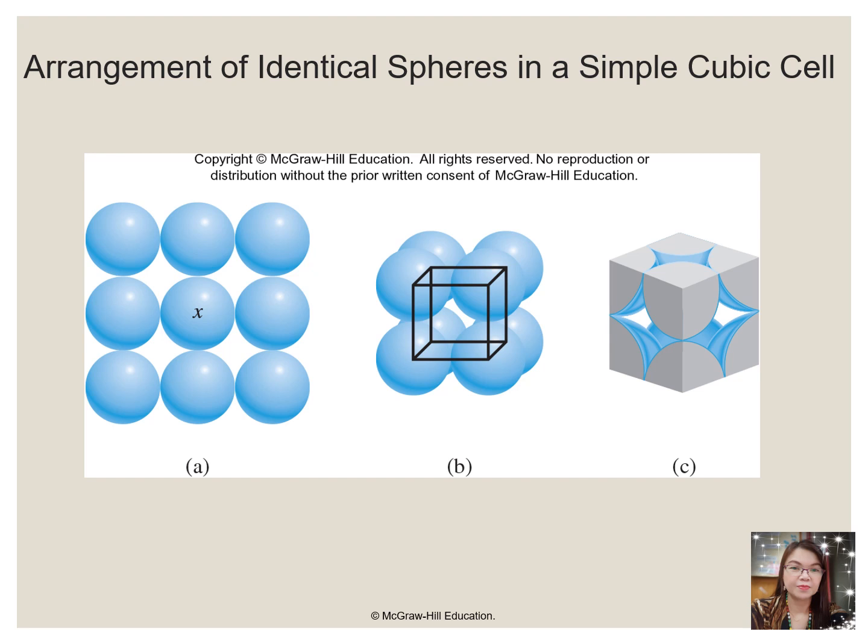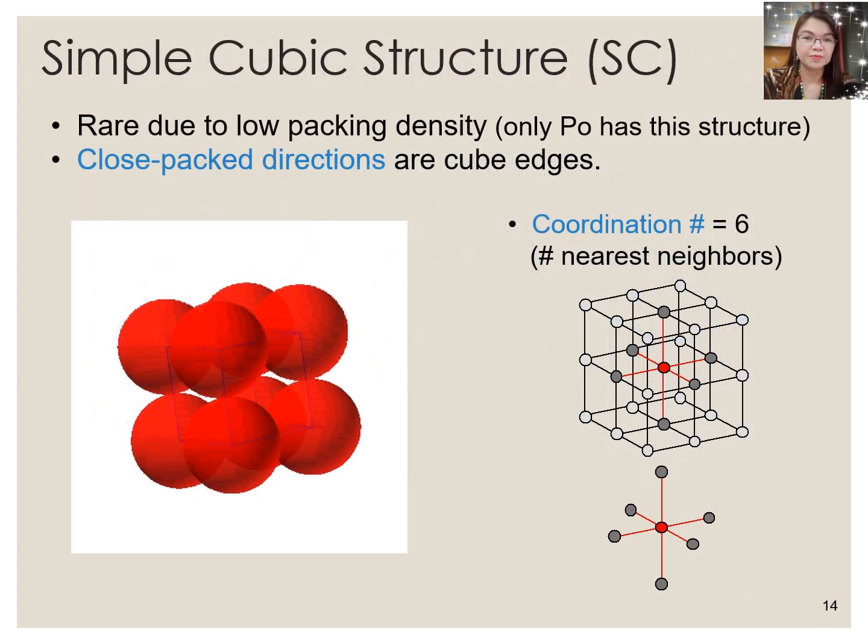The arrangement of the atoms in a solid that has a simple cubic unit cell was shown in the figure. Each atom in the lattice has only six nearest neighbors in an octahedral arrangement. Consequently, the simple cubic lattice is an inefficient way to pack atoms together in space because only 52% of the total space is filled by the atoms. The only element that crystallizes in a simple cubic unit cell is polonium. Simple cubic unit cells are, however, common among binary ionic compounds, where each cation is surrounded by six anions and vice versa.